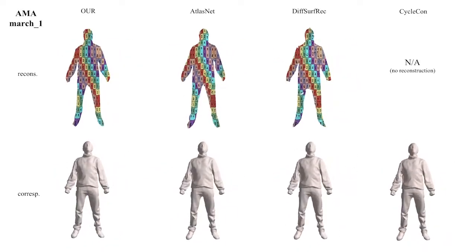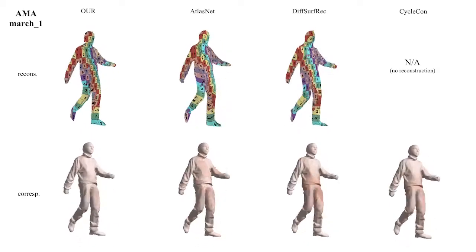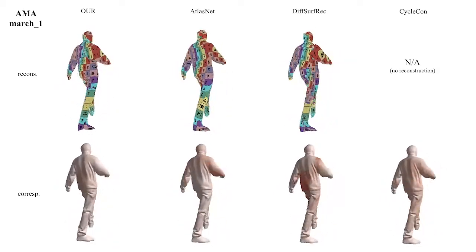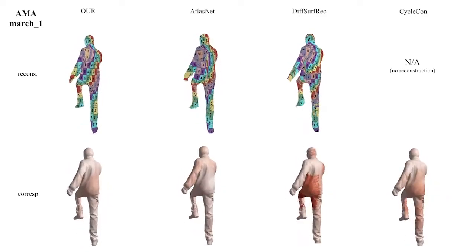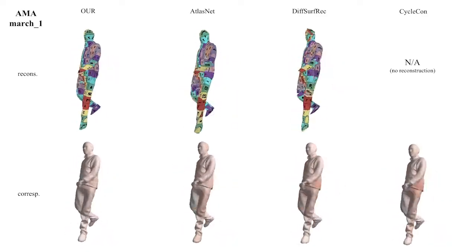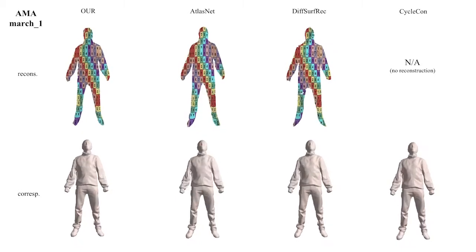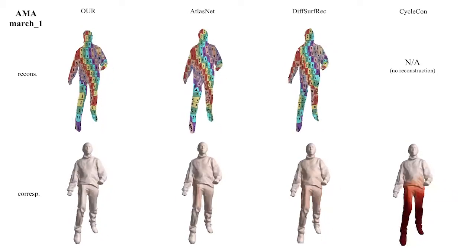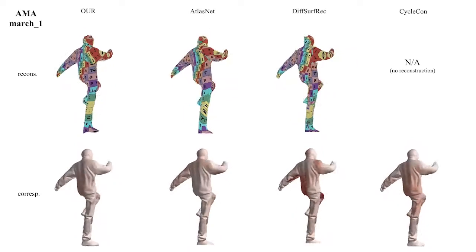In the marching sequence, again, DSR and CycleCon swap the legs of the human. Moreover, the reconstruction of AtlasNet undergoes severe distortion throughout the sequence — for instance, in the chest, belly, and right leg of the human — while our method remains stable across the sequence.